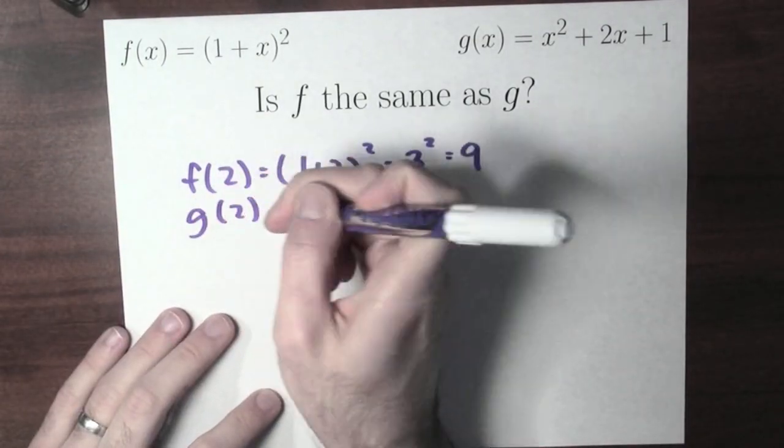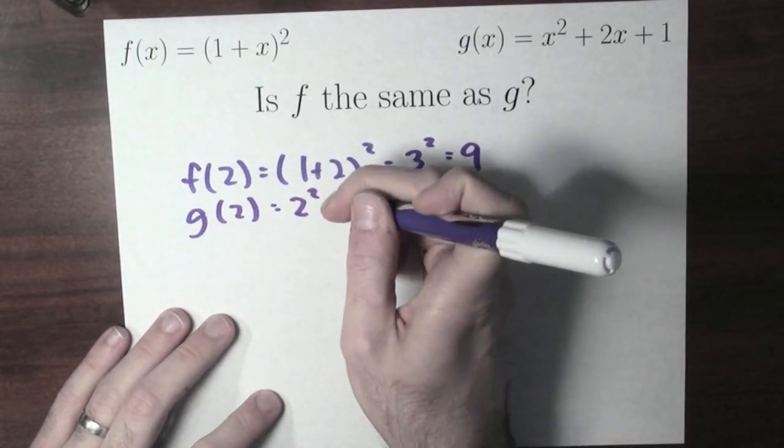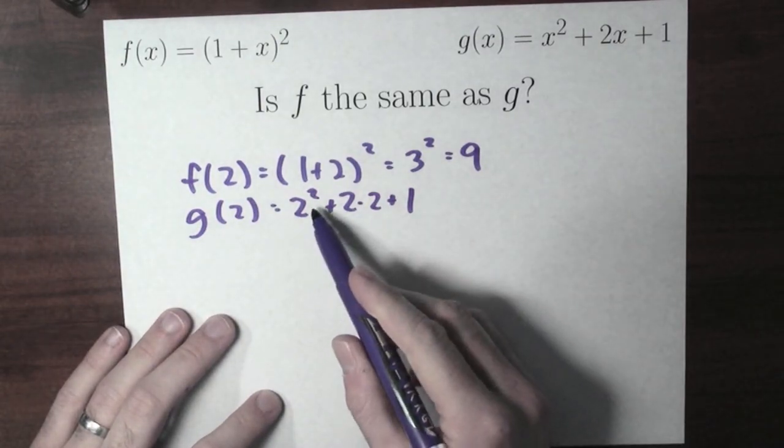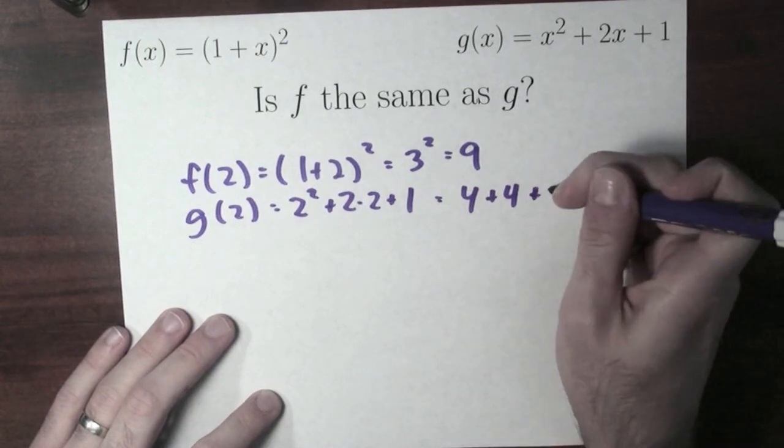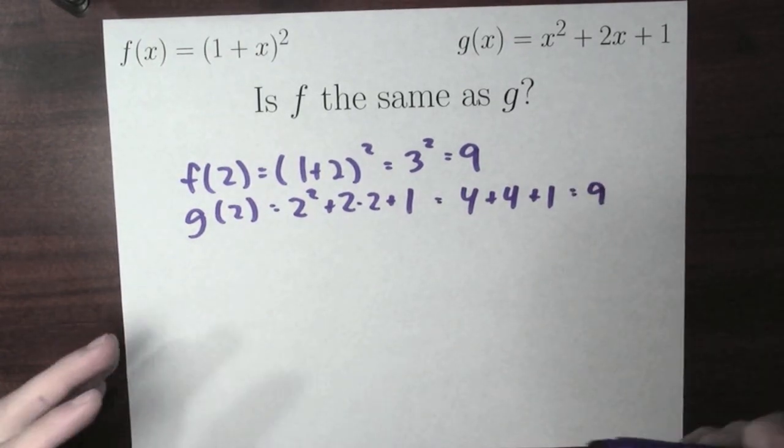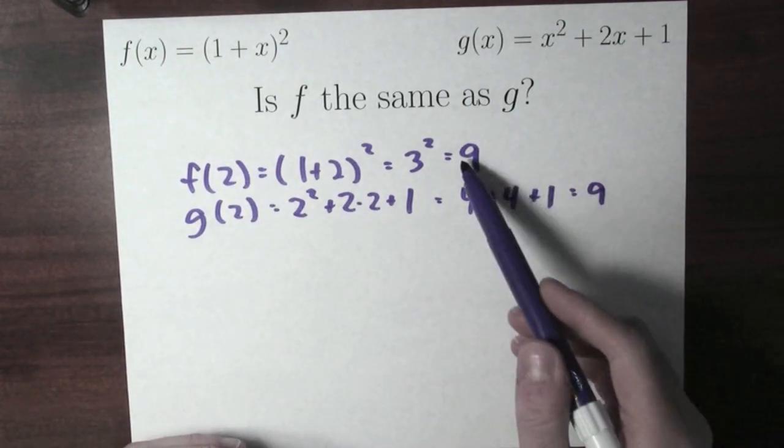Well, what's g of 2? g of 2 would be 2 squared plus 2 times 2 plus 1. 2 squared is 4, 2 times 2 is 4 plus 1. 4 plus 4 is 8 plus 1 is 9. Look, f and g, when I plug in x equals 2, give me the same output value of 9.